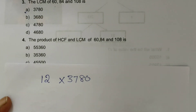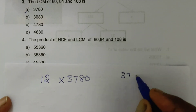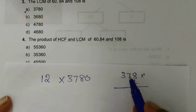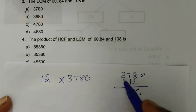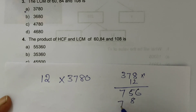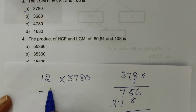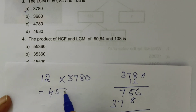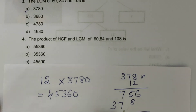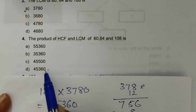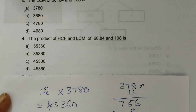The LCM is 3780, and 3780 into 12 gives us 45360. Option D is the correct answer.